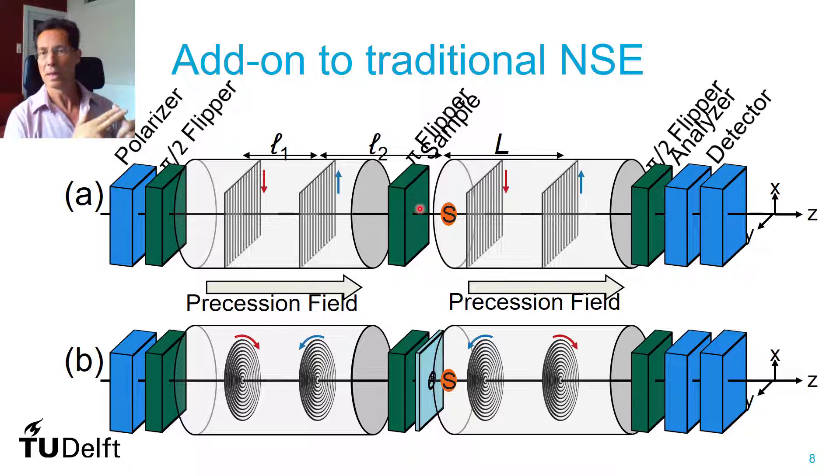In Delft, at ISIS, in this add-on in Indiana, Oak Ridge, Kashima. So this would give other options for SESANS.